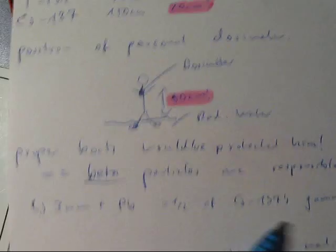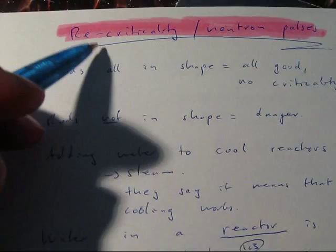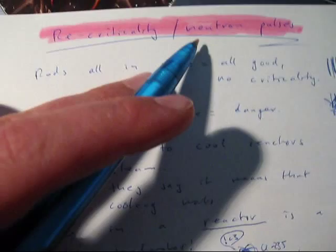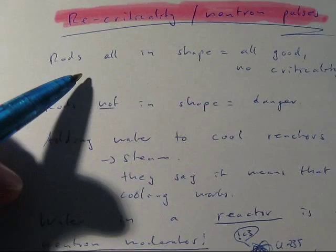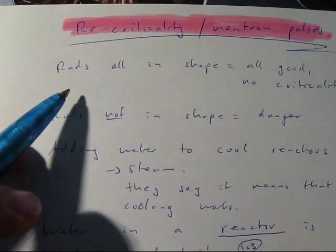The other thing you probably heard about is the re-criticality or neutron pulses. They said they could measure neutron pulses somewhere. Of course, we never know if this is all true, or who made that up, or who posted it, or if TEPCO even know what they're doing, because probably they're not, but let's just assume that we actually did see neutron pulses, and they were actually real neutron pulses. So let's see what happened. Okay, the reactor shut down, and the control rods and safety rods and everything went, and when they're all in shape, and all aligned perfectly like this, and that's good. There is no criticality.